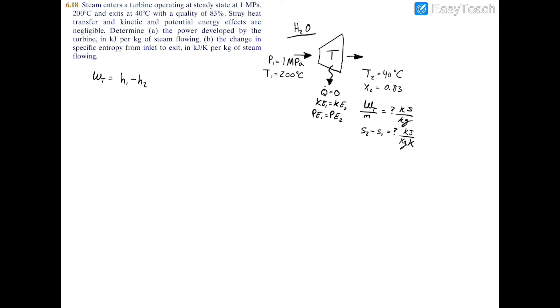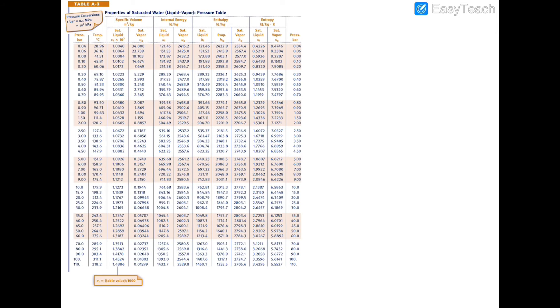If we go to 10 bar, which is down here, we see that the saturation temperature is 179.9, so therefore we're to the right of the vapor dome, meaning we're in the superheated region.